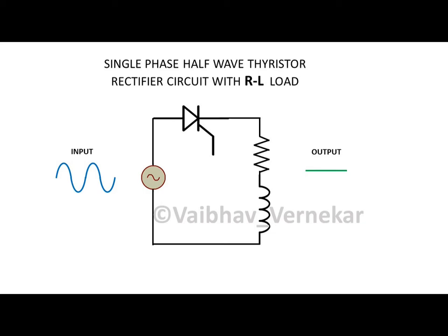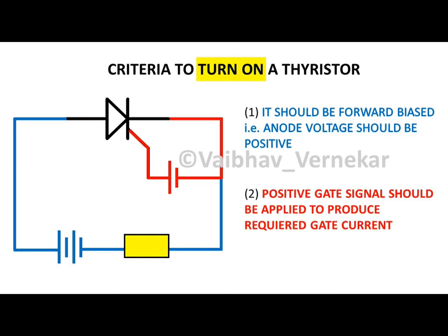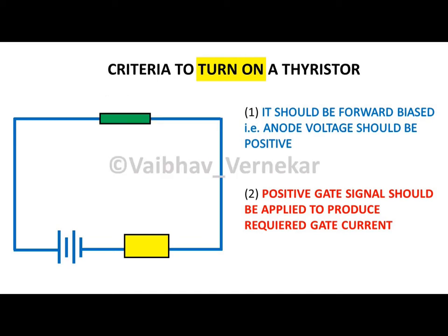The thyristor conducts the applied voltage under two conditions. First, it should be forward biased, i.e., anode voltage should be positive. Second, a positive gate signal should be applied to produce the required gate current. If both conditions are satisfied, the thyristor acts like a closed switch allowing all current to pass through it. If either one of the two conditions is not satisfied, then the thyristor is an open switch blocking all the current in the circuit.